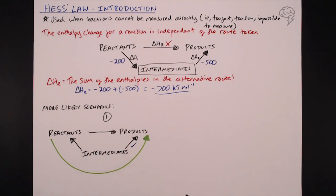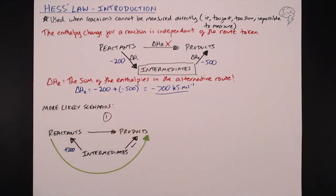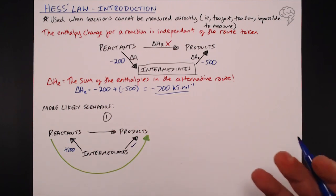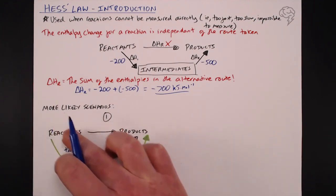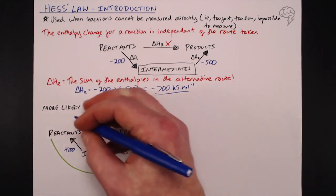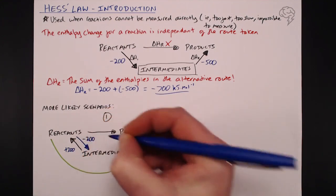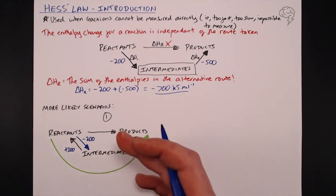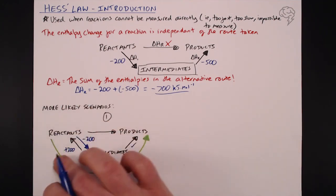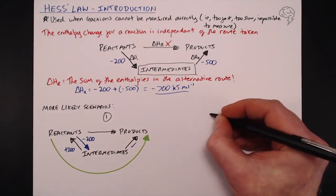Let's say that reverse arrow has a delta H of plus 200 kilojoules per mole. We can't use it as-is because it's going the wrong direction. But with Hess's law, if we flip that arrow around to make it go the correct way, the delta H value will be equal and opposite — so it becomes minus 200 kilojoules per mole. If you're in a situation like this, which you'll often see with delta H-f values, you need to flip that arrow and invert the number. The enthalpy change for the reverse reaction is equal and opposite.